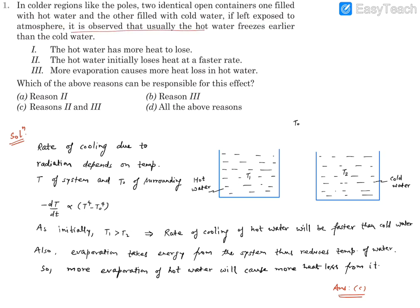It is observed that usually hot water freezes earlier than the cold water. There are certain reasons given to this process. We need to identify the responsible causes for this effect. First is the hot water has more heat to lose. Second says the hot water initially loses heat at a faster rate. And the third reads more evaporation causes more heat loss in hot water.